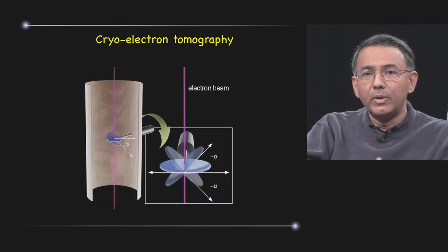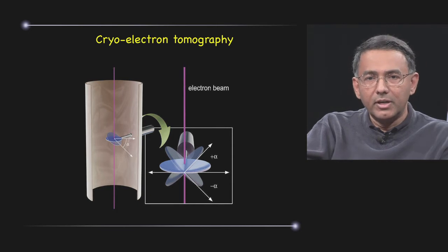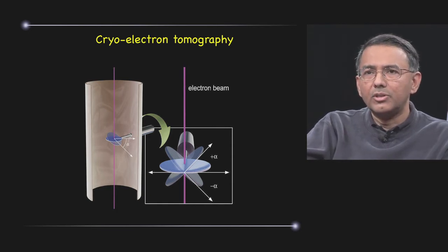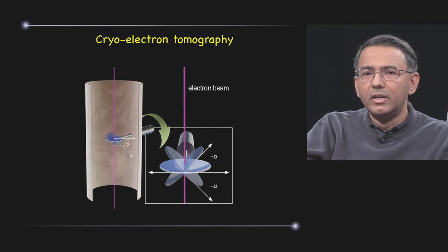Imaging protein assemblies when they're still present in the context of a virus or a cell is a more challenging entity. And here we use a technology called cryo electron tomography, which is uniquely suited to looking at objects that are one of a kind.